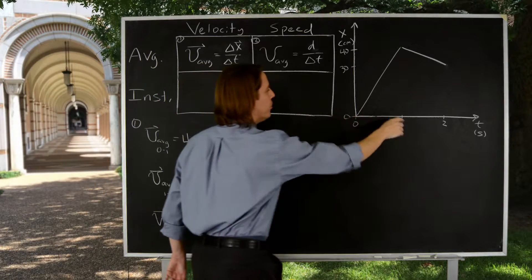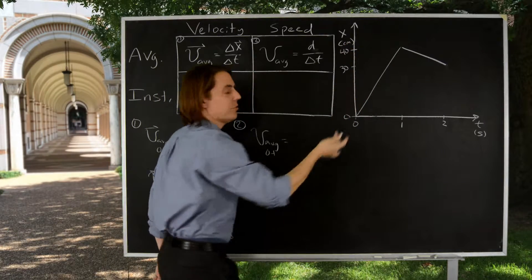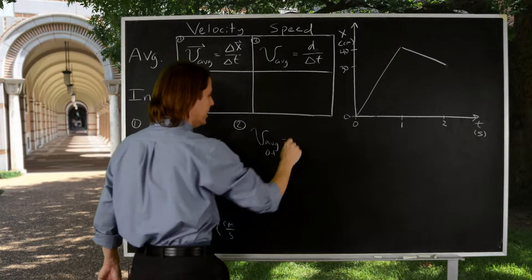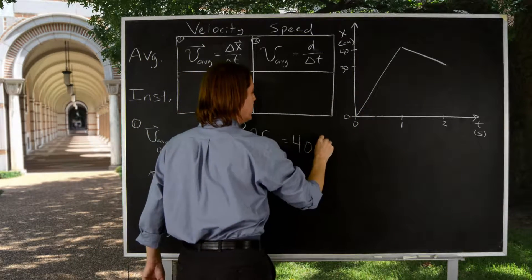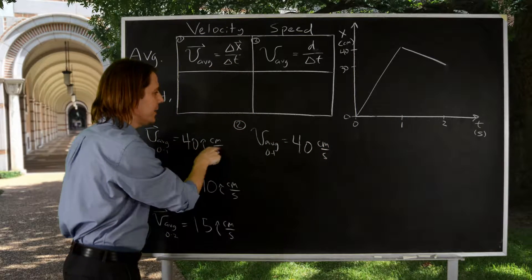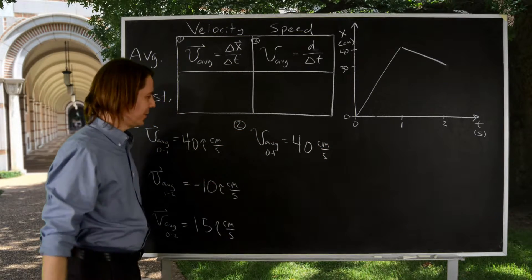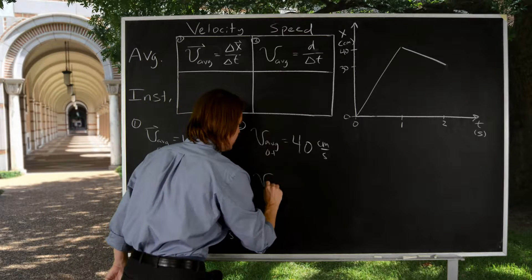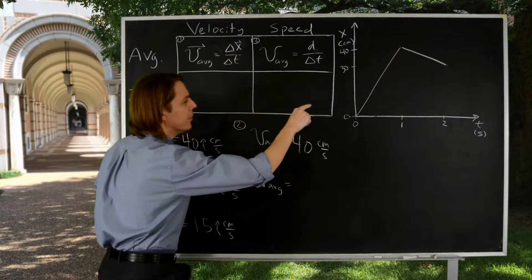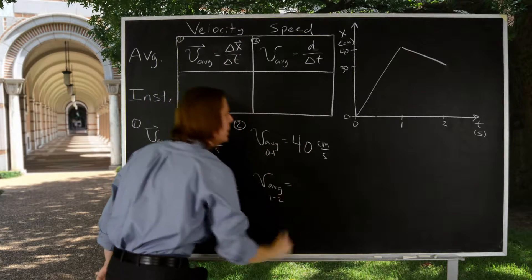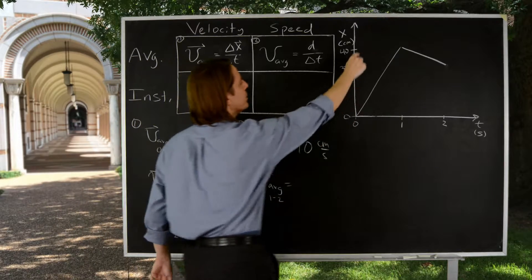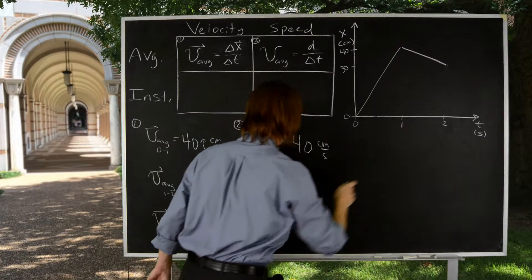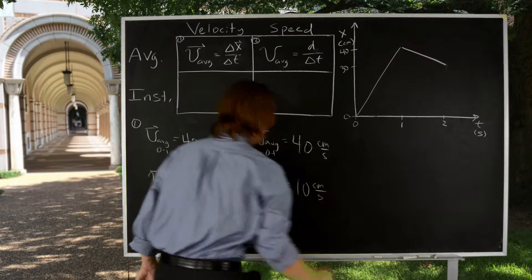So let's go through and think about distance now over those same intervals. This is box 2. We want the average speed from 0 to 1. From 0 to 1, it moved from 0 to 40 centimeters, so the distance it traveled was 40. So 40 over 1, that's 40 centimeters per second. No i hat, because this is not a vector. Then the average speed from 1 to 2, it traveled 10, from 40 to 30. 10 in one second. So that's 10 centimeters per second.